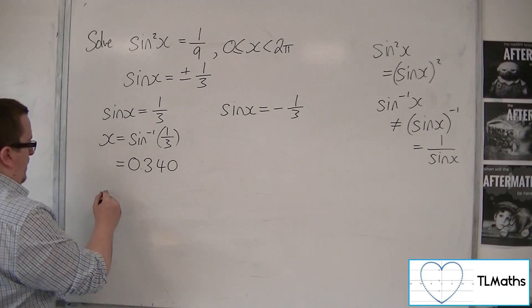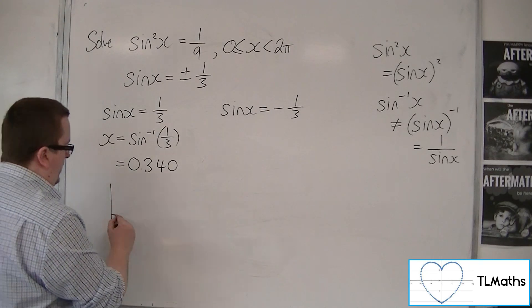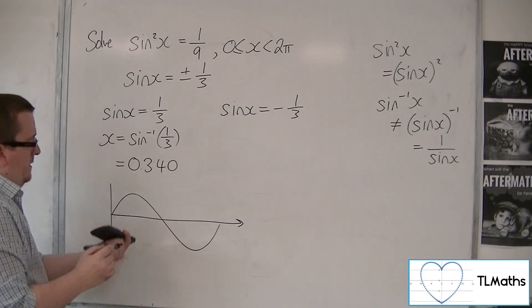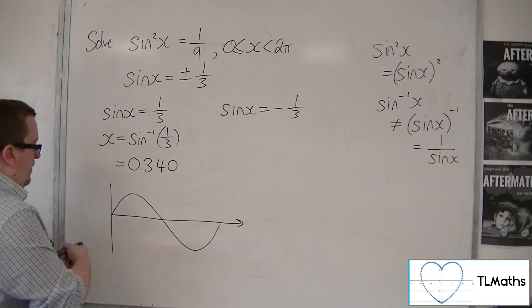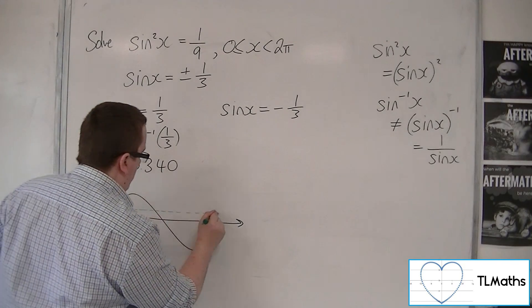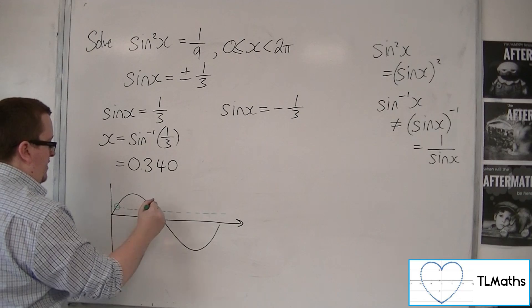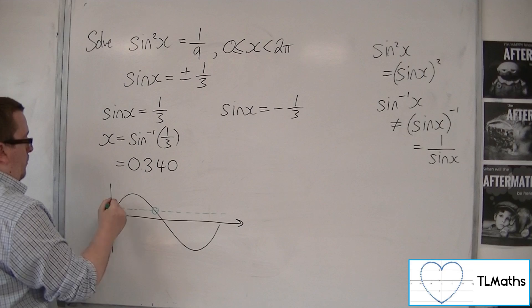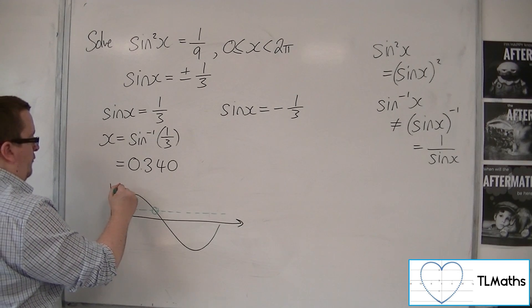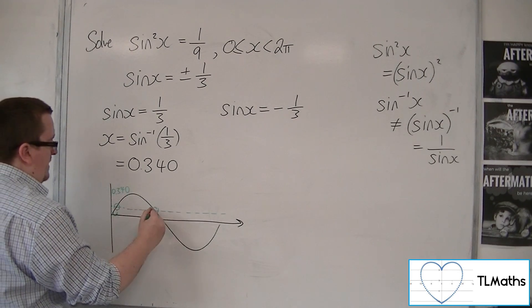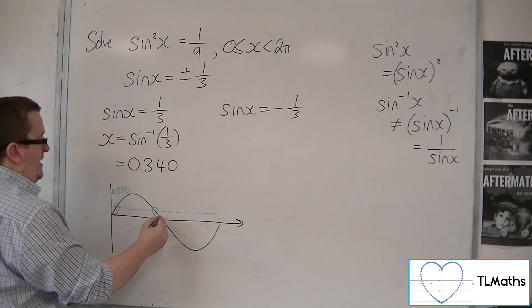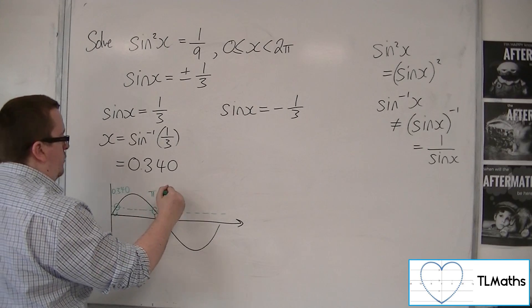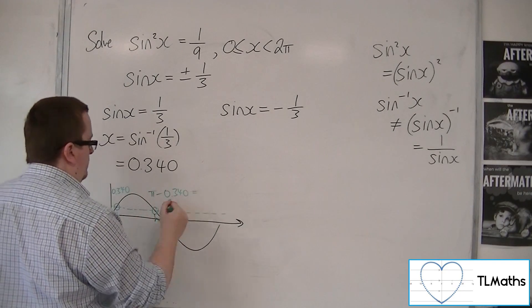So what we're going to do is we are going to draw ourselves the sine curve. Now we're looking at 1/3. So 1/3 is that horizontal line there. So we have a solution here and a solution there. This one is the 0.340. That distance must be the same as that one. Now we know that that is π. So this is π take away 0.340 to get that one.